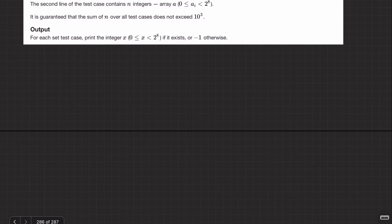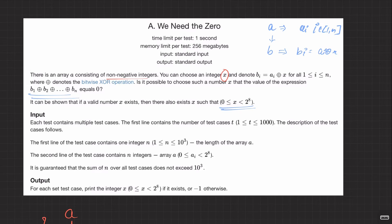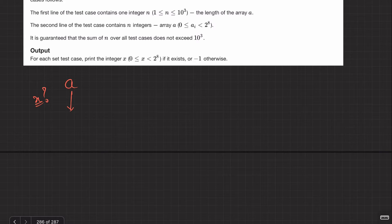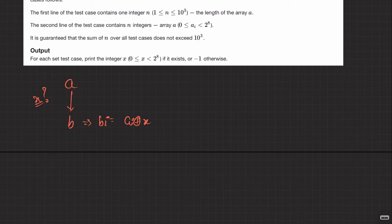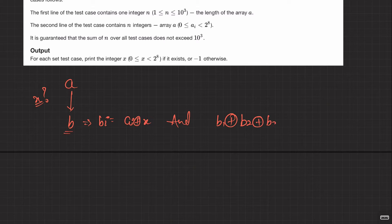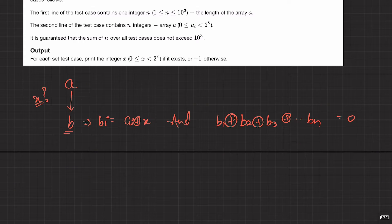So the question is simple. You are given an array A of non-negative integers. Is there a number x in the range 0 to 2^8 such that, after XORing x with every element of A to get array B (where b_i = a_i XOR x), the XOR of all elements of B equals zero? If so, print x; otherwise print minus one.